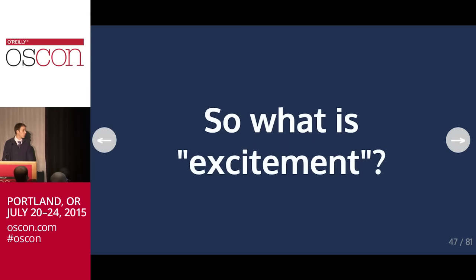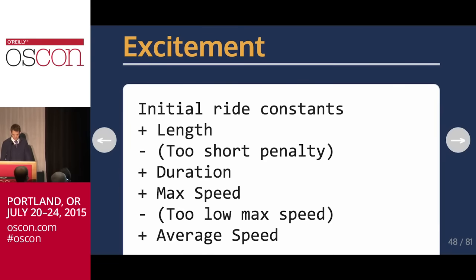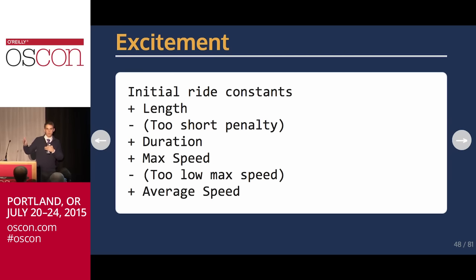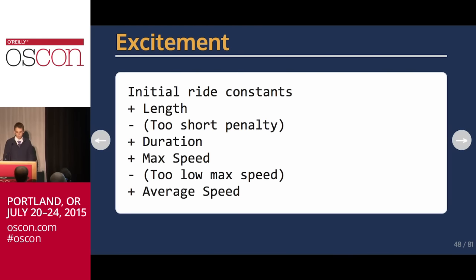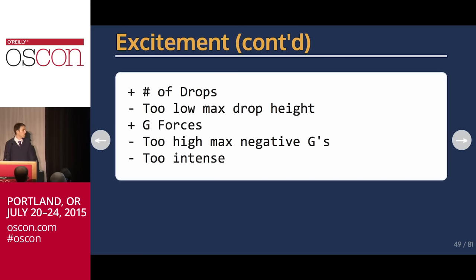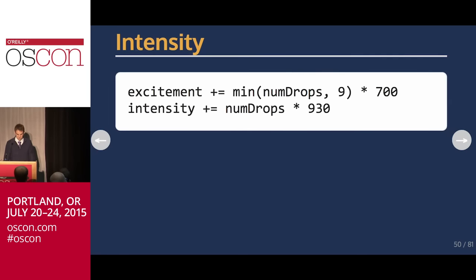That's where I found the excitement and intensity data. So what is excitement? You start with some initial ride constants based on whether it's a wooden or steel roller coaster. Length is probably the biggest determinant — both distance and time — it's just a linear multiplier. If it's too short, you get a penalty subtracted. Max speed contributes to excitement — the faster, the more exciting. Higher average speed means more exciting. More drops means more exciting, but if the drop height is too low you get a penalty — it says this is a boring ride. And if it's too intense, excitement is also subtracted.